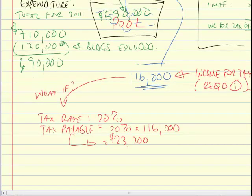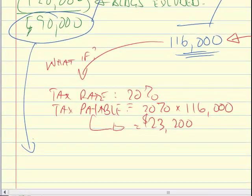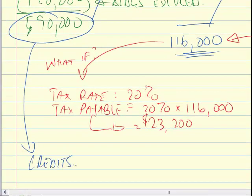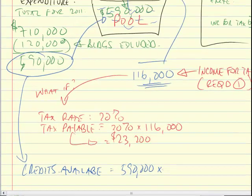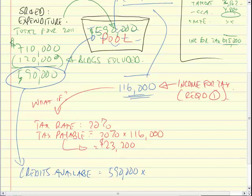So this $590,000 goes two ways: it goes into the pool, and it goes into calculating the credits. The credits available are simply what you spent — $590,000 — times your specified rate. What's the specified rate? 35%. That gets you $206,500. So the accountant made their calculation correctly too — it matches the credits he expects to get.